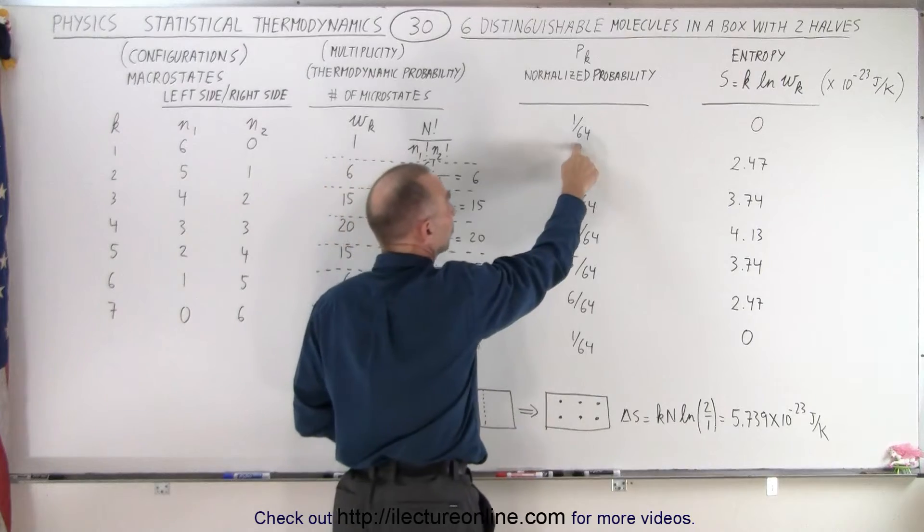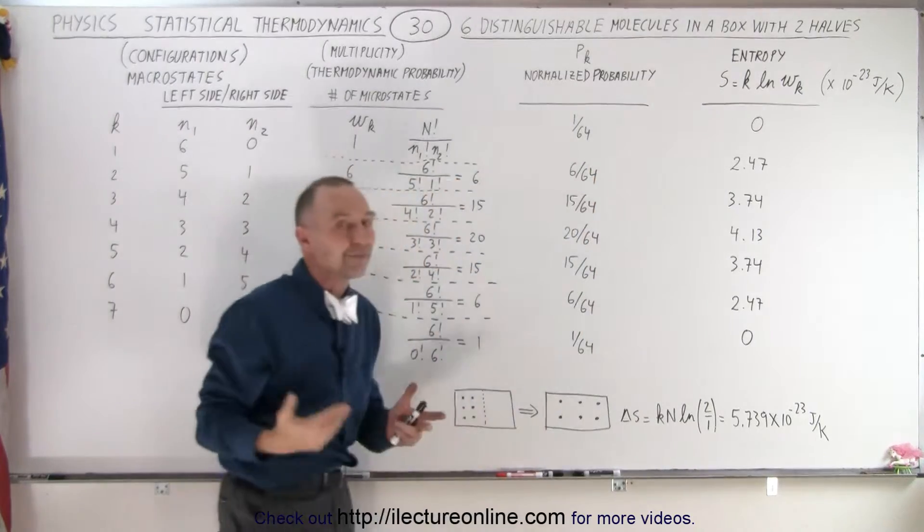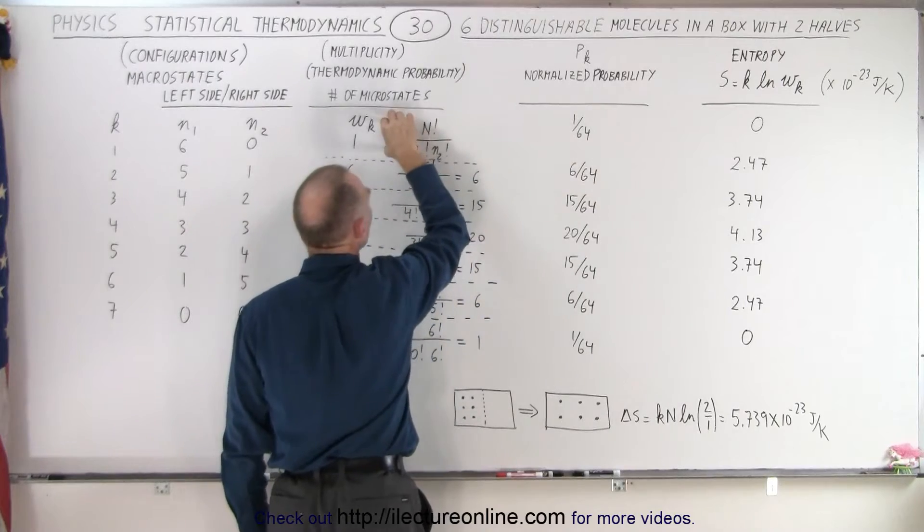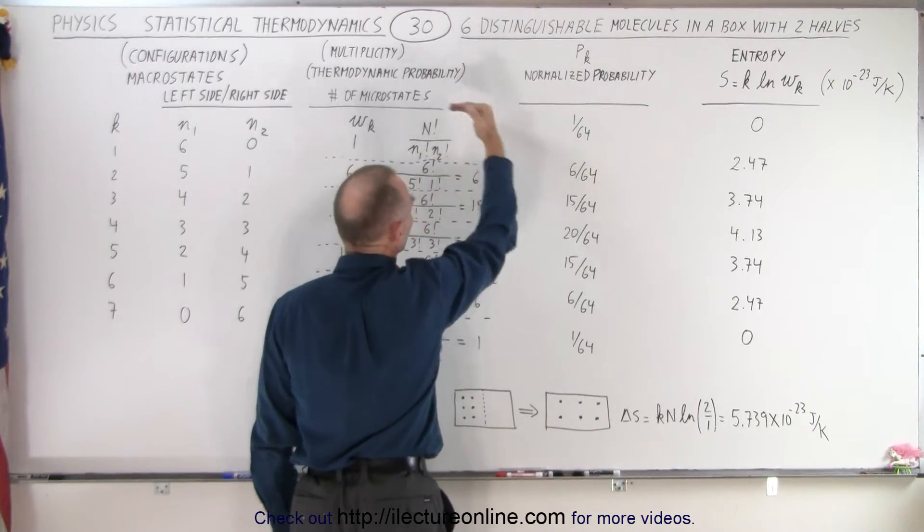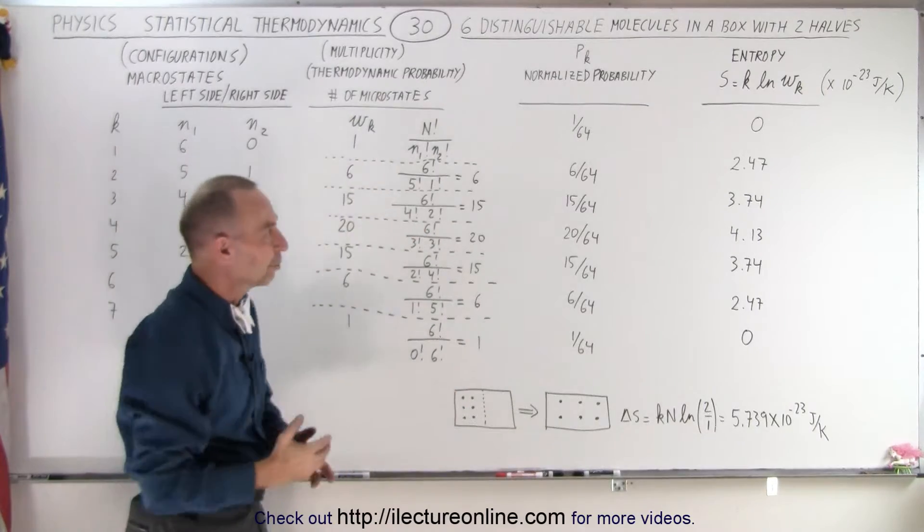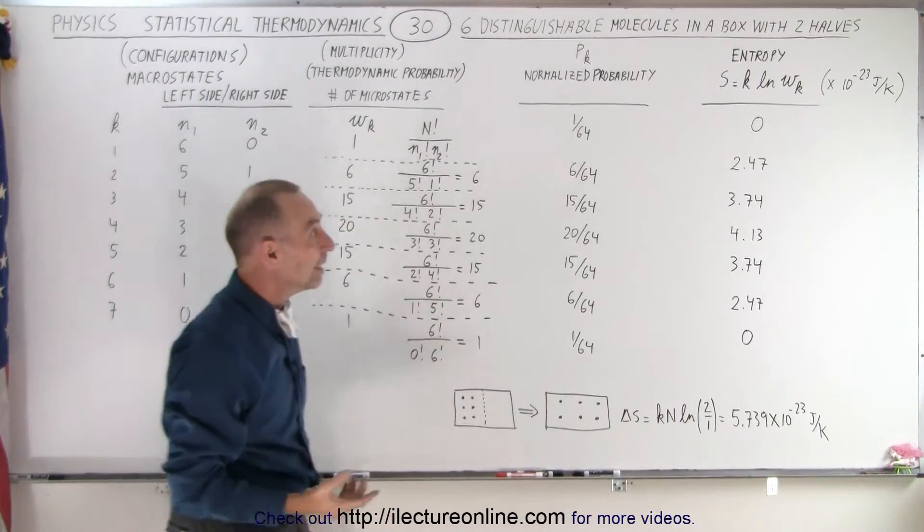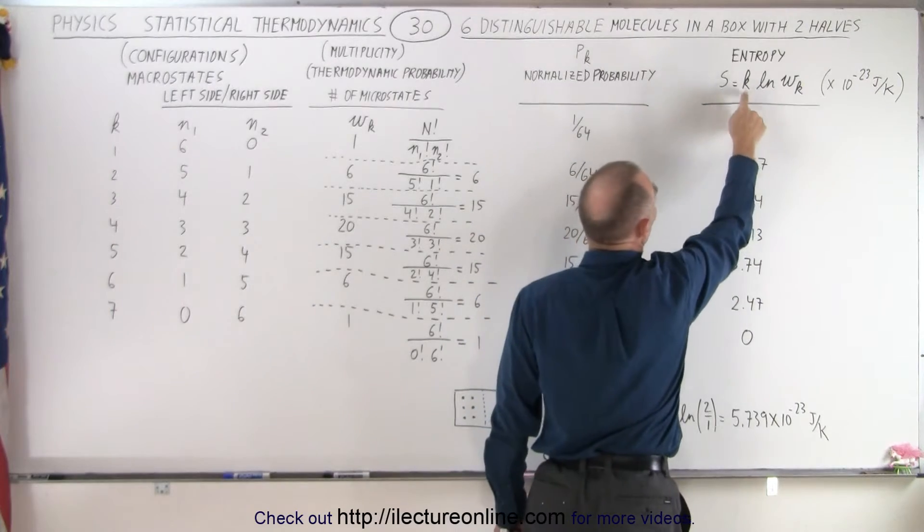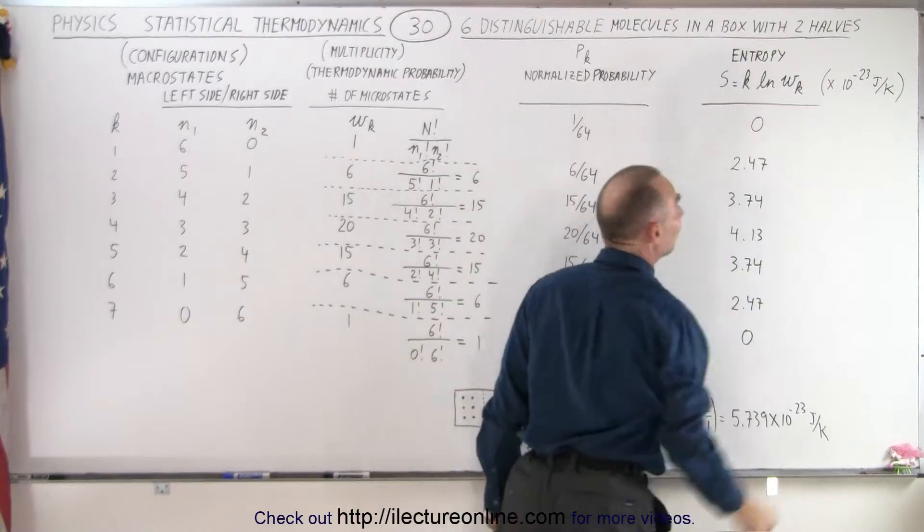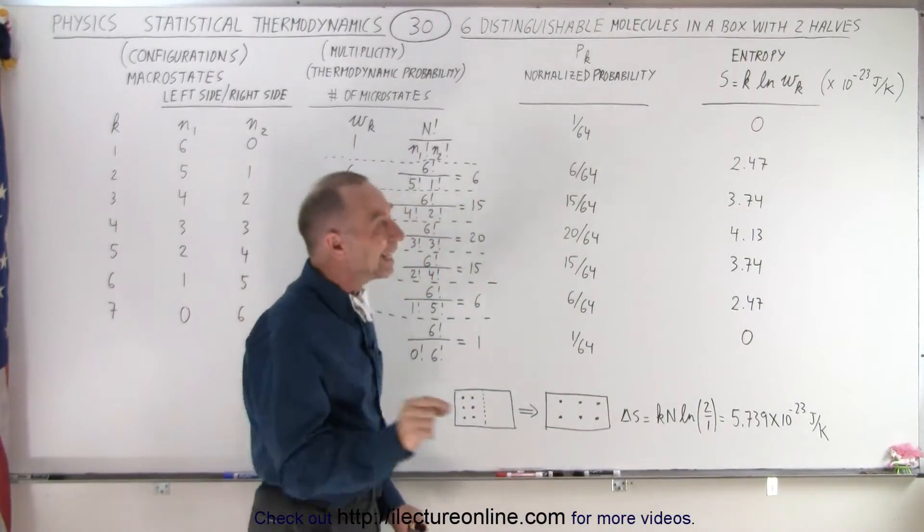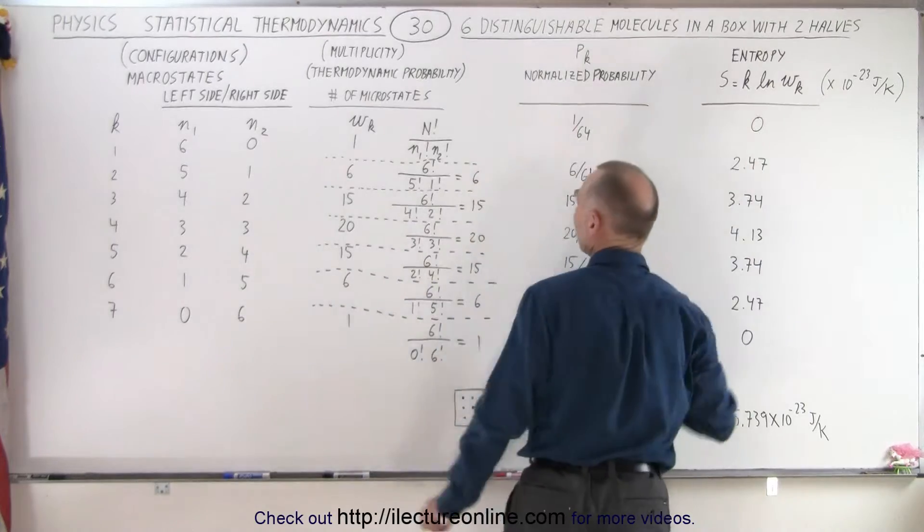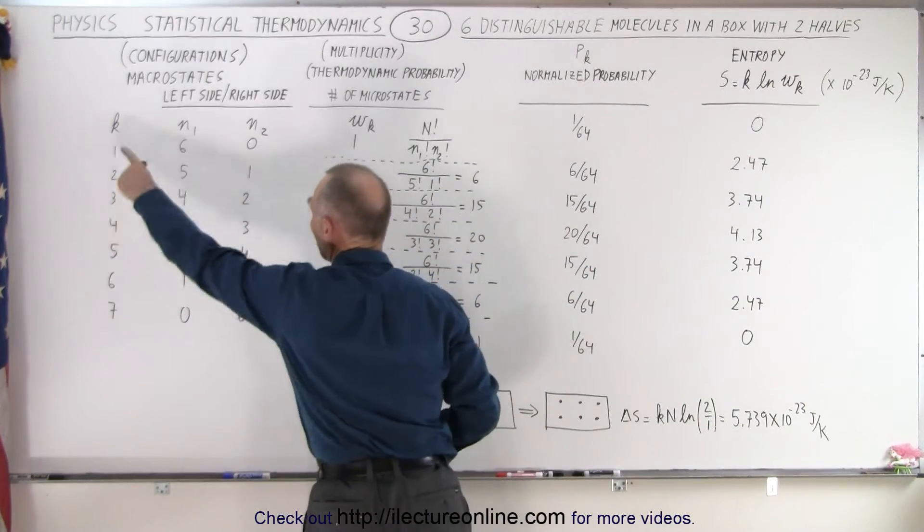So we divide it by the number 64, which is the total number of microstates. So the number of microstates in this configuration divided by the total microstates in all the configurations. That will give you the normalized probability. And finally here we calculate the entropy, which is equal to the Boltzmann's constant times the natural log of the number of microstates in that microstate. So W sub K is the specific microstate we're in.